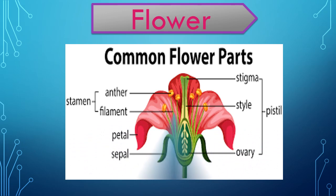Flower. It is the reproductive part of the plant, and a typical flower has typical parts. You can see on your screen: from the stem there is a stalk of the flower, then there are green leaf-like structures known as calyx; a single member of the calyx is known as a sepal. The next colored structures are known as corolla, and a single member is known as a petal. The male reproductive parts of the flower are known as the androecium, and a single member of the androecium is called a stamen.